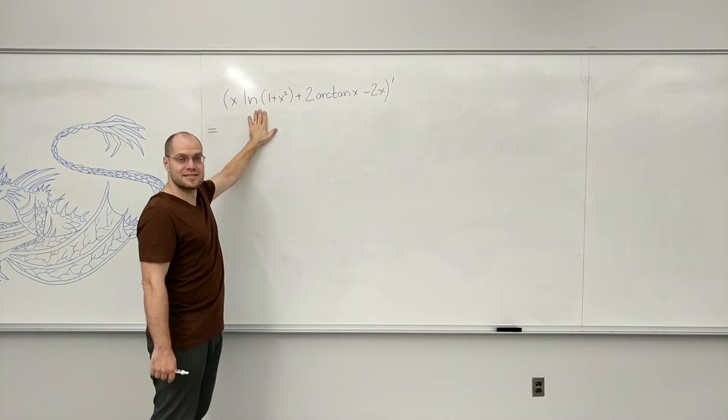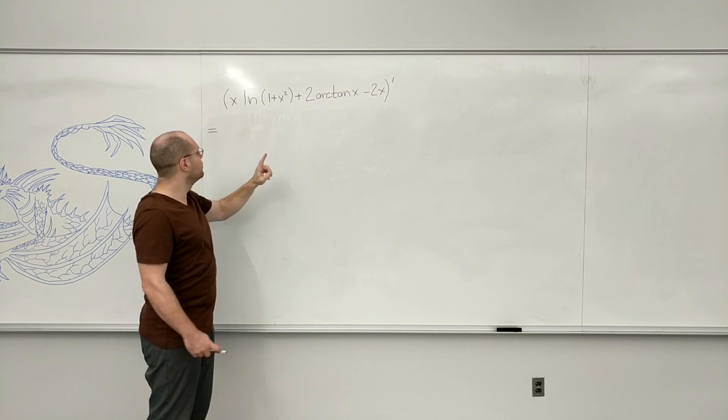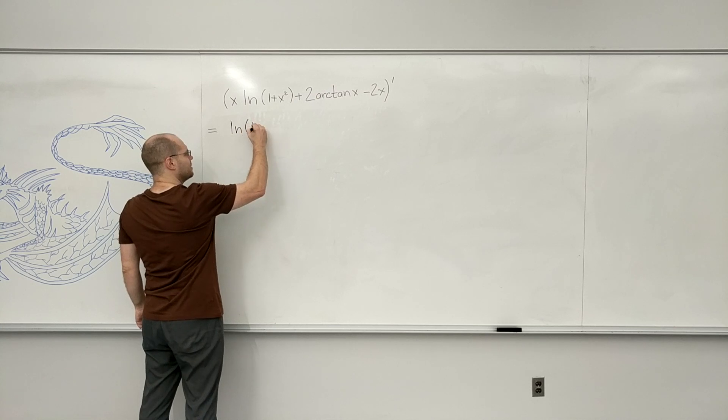Then of course whoever says product is right. So using the product rule in the right order we have the derivative of x which is 1, so we're just left with log of 1 plus x squared.